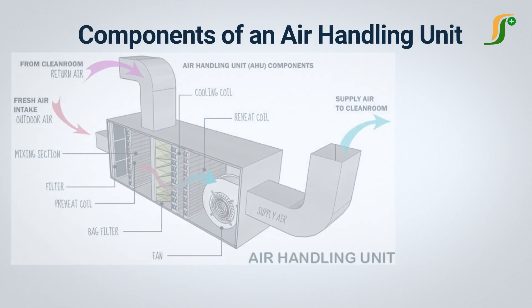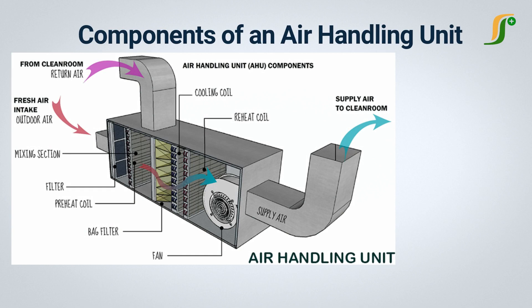The main components of an air handling unit: Housing is the insulated cover of the air handling unit. AHU components like air filters, cooling and heating coils, and blowers are placed in the housing. It prevents the effect of the outside environment on the cooling and heating coils and saves energy. A blower is a type of fan used to force air to move in ducts toward the rooms of the manufacturing area. Generally, centrifugal blowers are used in air handling units.